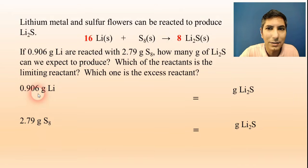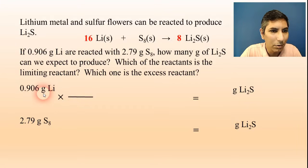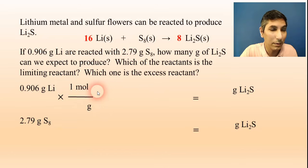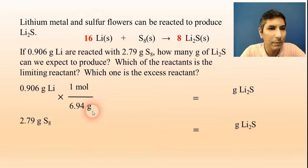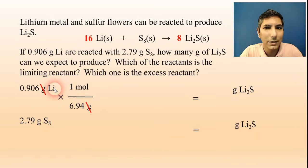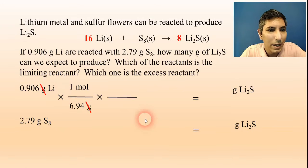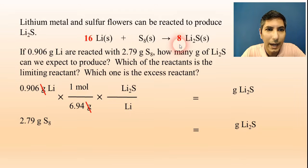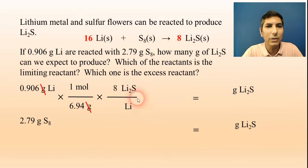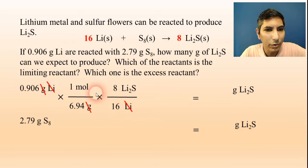Starting with 0.906 grams of lithium, step one is to convert to moles. Putting grams on the bottom and one mole on top — the periodic table tells us one mole of lithium is 6.94 grams — so grams cancel and we're in moles of lithium. Step two is the mole ratio: put lithium on the bottom and lithium sulfide on the top. Referring to the balanced equation, this is an 8-to-16 mole ratio based on the coefficients, so 8 to 16. Lithium cancels and now we're in moles of lithium sulfide.